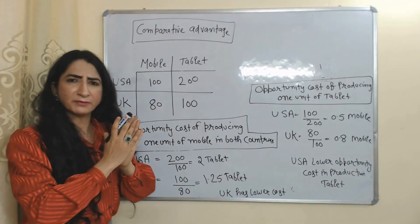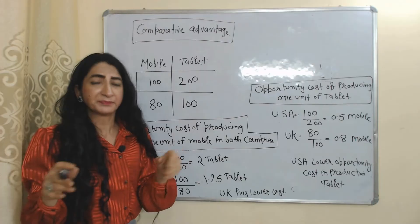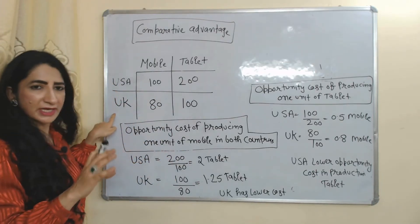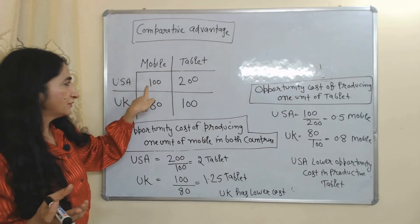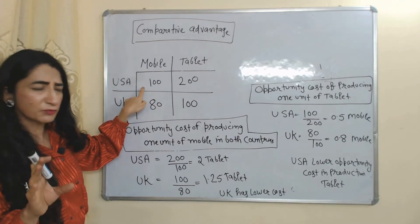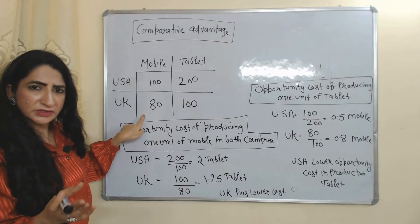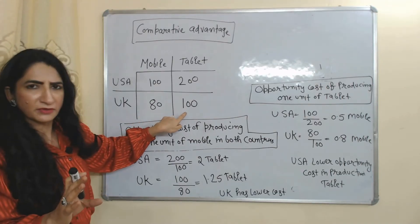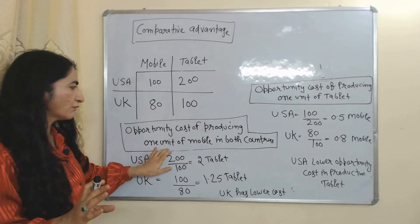With the help of one example we will clearly understand this theory. This example is hypothetical. We assume we have only two countries — USA and UK — and they are producing only two goods: mobile and tablet. With all their resources, USA can either produce 100 units of mobile or 200 units of tablet. With all their resources, UK can either produce 80 units of mobile or 100 units of tablet. First of all we will see the opportunity cost of producing one unit of mobile in both countries.